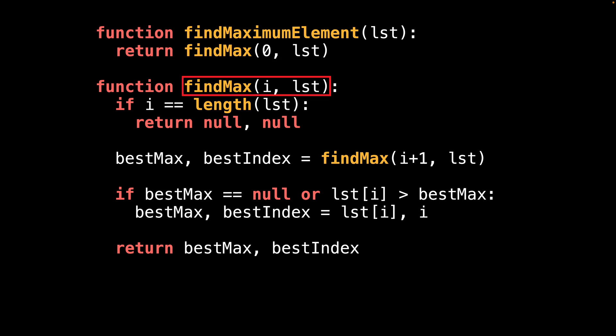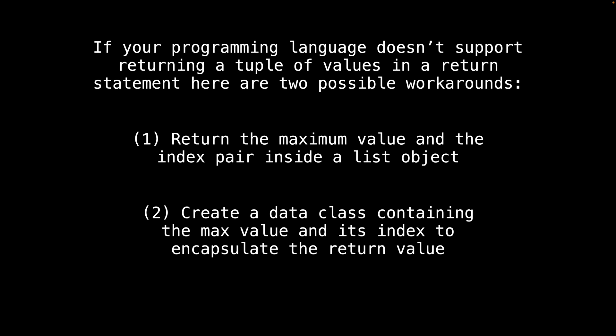All this function does is call the find max function with a starting index of zero as well as a reference to the list. Just like in the previous example, find max takes i, the current index position, and lst, a reference to the list. Our base case is when we've reached the end of the list — in this case, return null, null. Since there are multiple return values, we need to return null for each one. One popular method is to return a list containing the index and the maximum value.